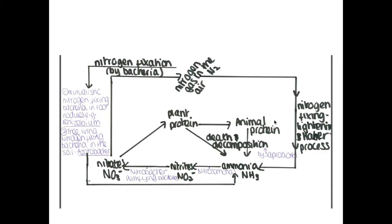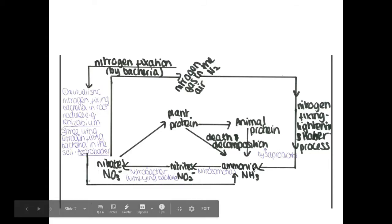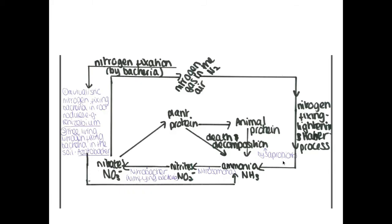Now animals get their protein from plants by eating them. And the nitrogen within animals and plants can return back to the soil, back to ammonia, by death and decomposition by saprobiont such as the fungi or some bacteria. So we're going to do a little bit on each one of these.